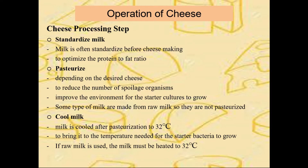First, standardize the milk. Milk is often standardized before cheese making to optimize the protein to fat ratio to make a good quality cheese with high yield. Second is pasteurization. Pasteurized milk depends on the desired cheese. The milk is pasteurized to reduce the number of spoilage organisms and improve the environment for the starter culture to grow.